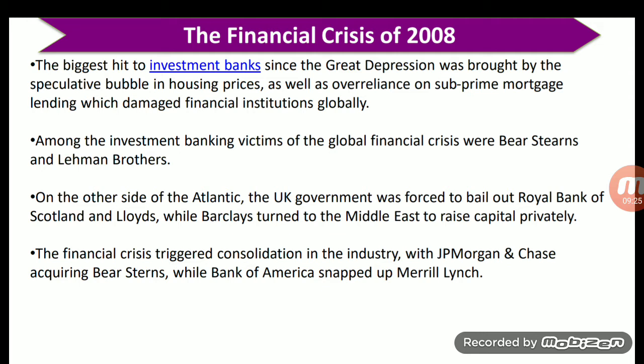Among the victims of the global financial crisis were Bear Stearns and Lehman Brothers — the biggest investment banks in America. Lehman Brothers held capital so enormous that it rivaled the combined GDP of several small countries. On the other side of the Atlantic, the UK government was forced to bail out Royal Bank of Scotland and Lloyds, while Barclays turned to the Middle East to raise capital privately. The financial crisis triggered consolidation in the industry, with JP Morgan Chase acquiring Bear Stearns while Bank of America snapped up Merrill Lynch.